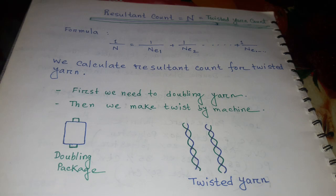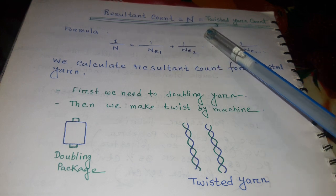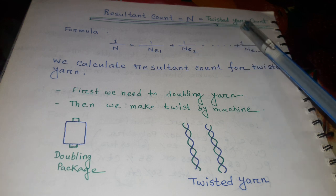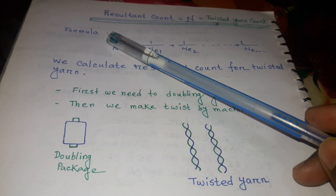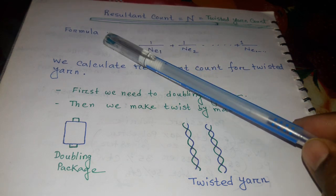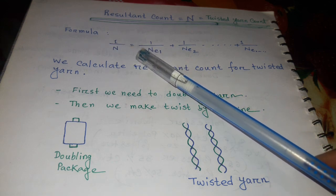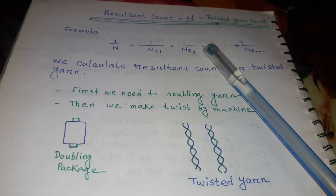Resultant count is denoted by N, equal to twisted yarn count. To determine resultant count, the formula is: 1/N = 1/Ne1 + 1/Ne2.